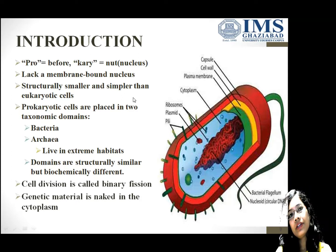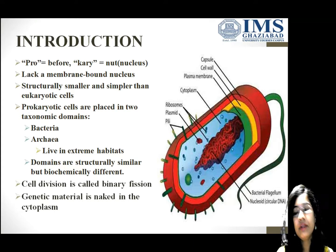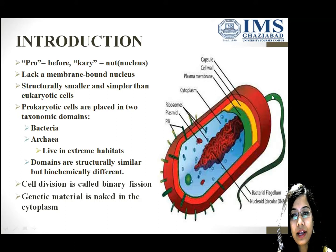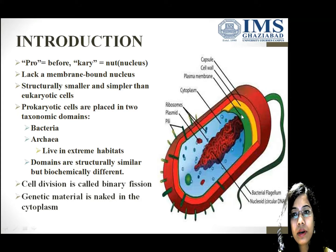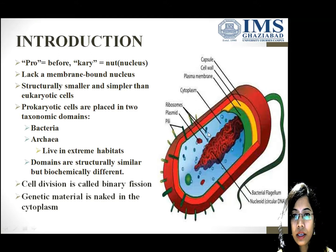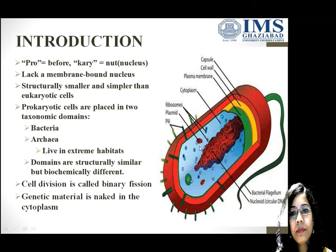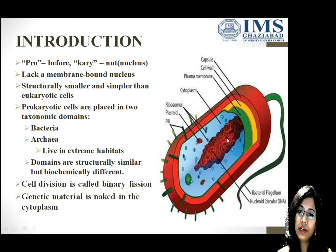If we study the structure of the prokaryotic cell from outer to inner side: first we see the green strand — that is flagella; then capsule layer; then the yellow one is cell wall; the green one is plasma membrane; then inside there is cytoplasm which is blue in color. You can see ribosomes — 70S ribosomes are present — plasmid, pili are also present, and nucleoid or circular DNA. Now we will study prokaryotic cell in detail.